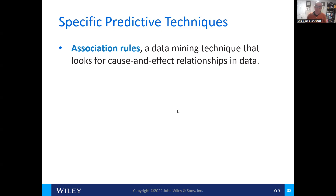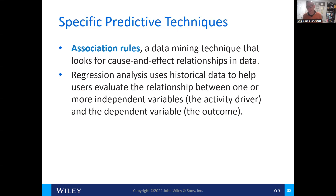When using predictive techniques, there are a couple of rules to follow. The first is the association rule, where data mining techniques look for cause and effect relationships. Using regression analysis for historical data helps us evaluate the relationship between one or more independent variables and the dependent variables.